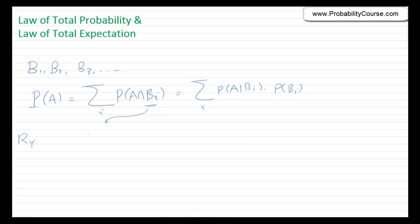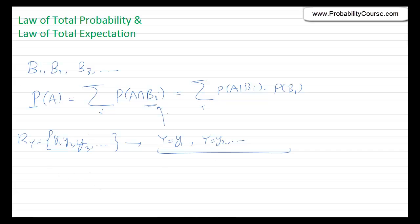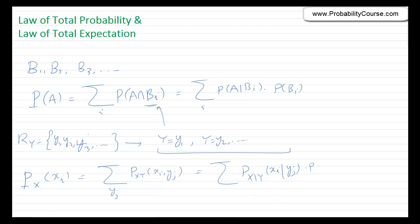These events Bi could be events Y = yi for a random variable Y. If the random variable Y can take values y1, y2, and so on — the possible values in its range — then the events Y=y1, Y=y2, and so on form a partition of the sample space. We can replace the Bi's with the events Y = yi. In fact, we already used this when finding the marginal PMF of X from the joint PMF: px(xi) = summation over all yj's of pxy(xi, yj), which can also be written as px|Y(xi | yj) * pY(yj).